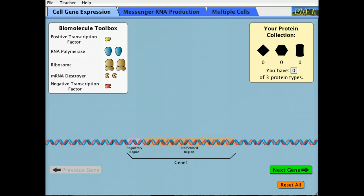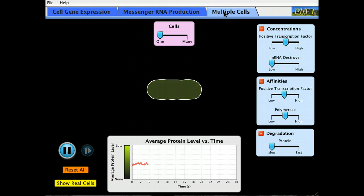Here's the opening screen. Let's jump to multiple cells. Here you see a bacterial cell that contains a gene from the jellyfish that encodes green fluorescent protein. It's under the control of a simple positive transcription factor.